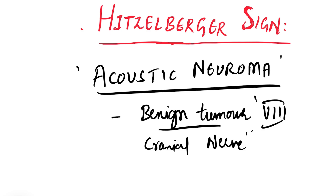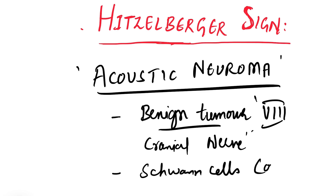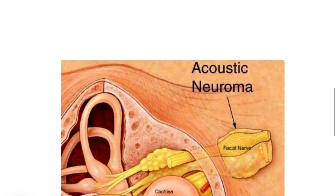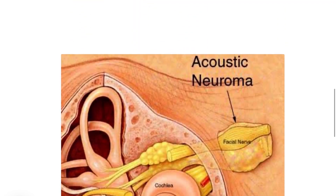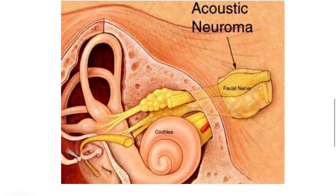So what exactly happens in this clinical condition is: this benign tumor of the eighth cranial nerve originates from the Schwann cells — Schwann cells are the cell of origin of this tumor. It will originate and expand, and while expanding, it compresses the facial nerve.